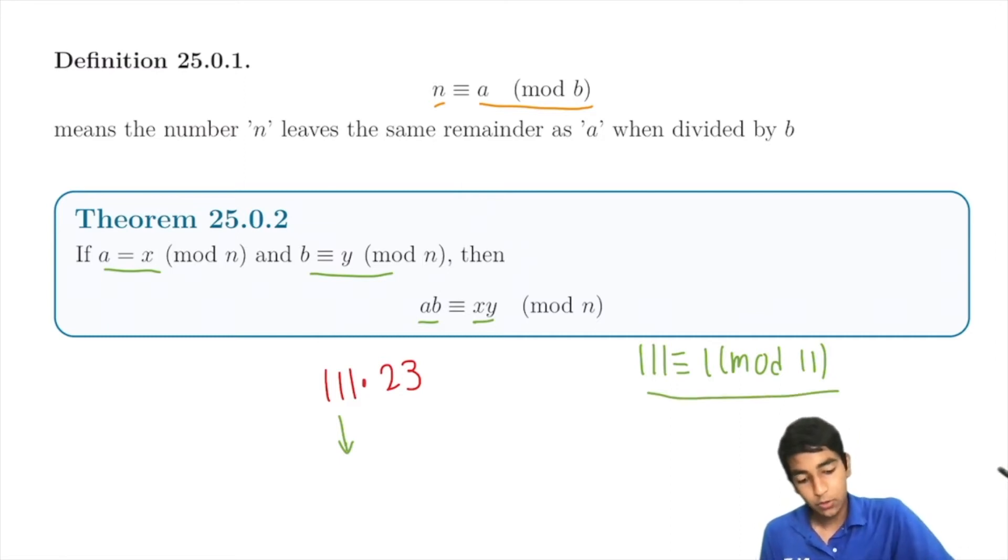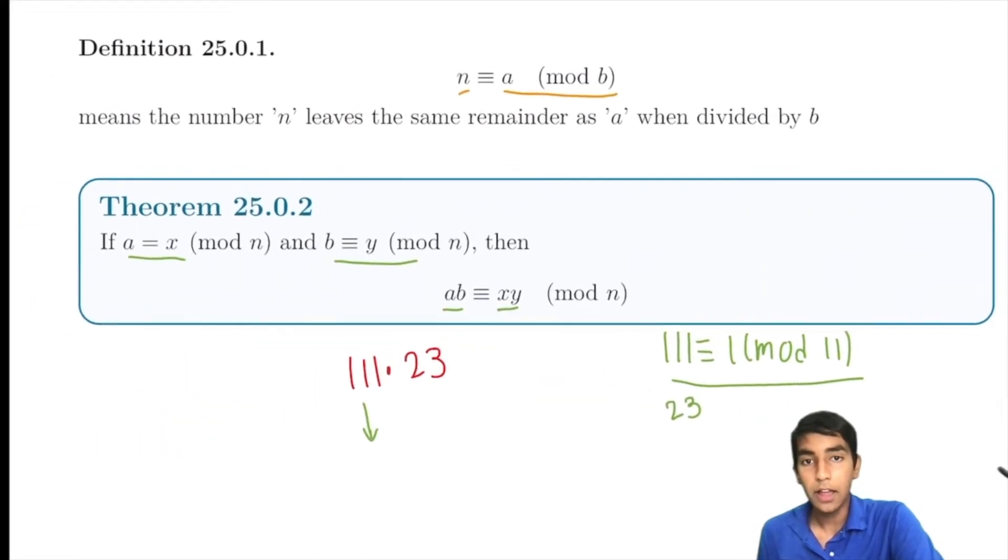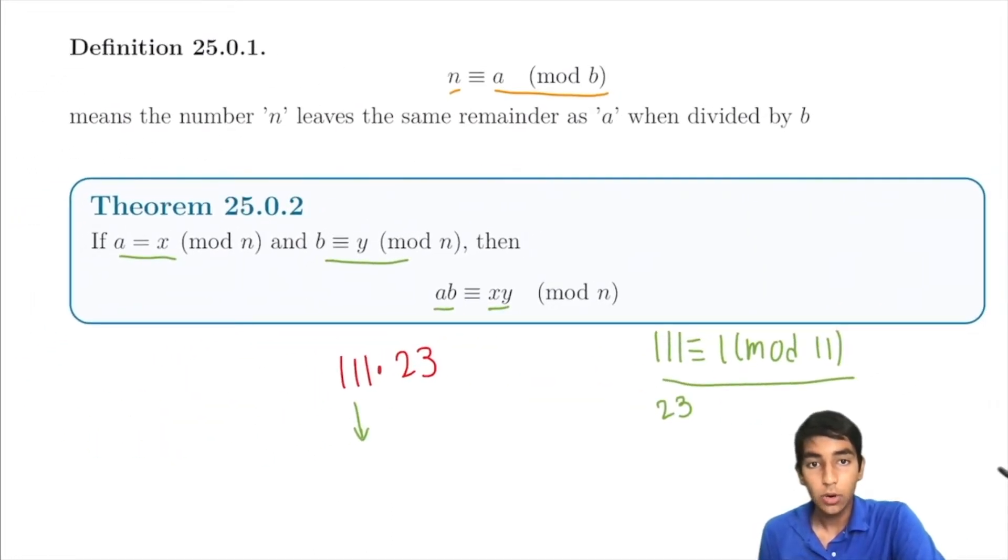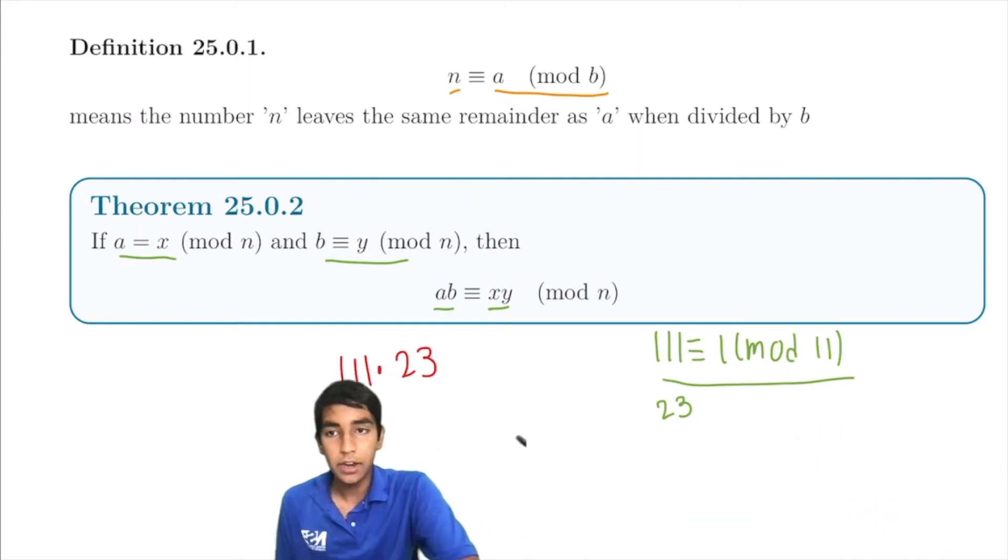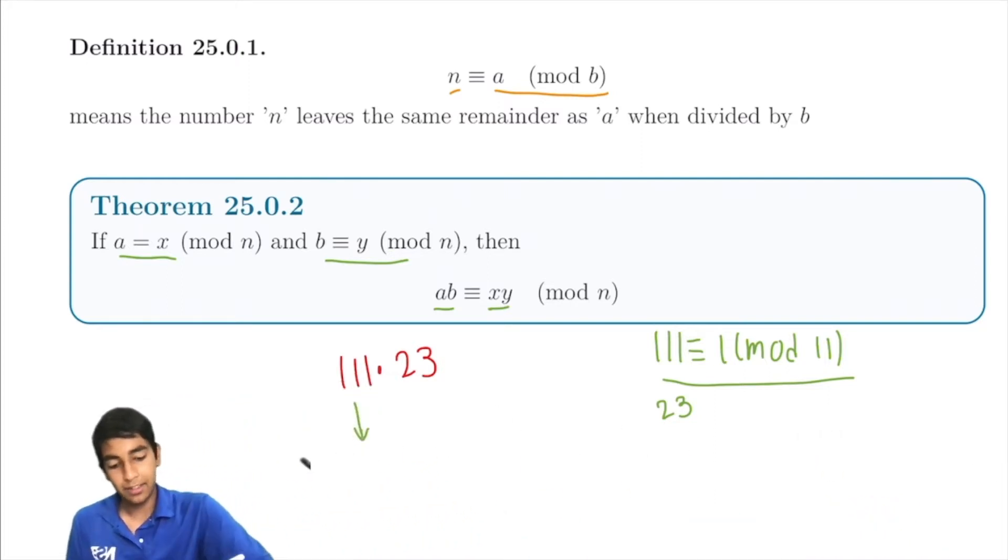Also, we have that 23 is congruent to 1 mod 11, because 23 is the same as 1 when divided by 11. So this just becomes 1 times 1 equals 1 mod 11. It leaves the remainder of 1 when divided by 11.